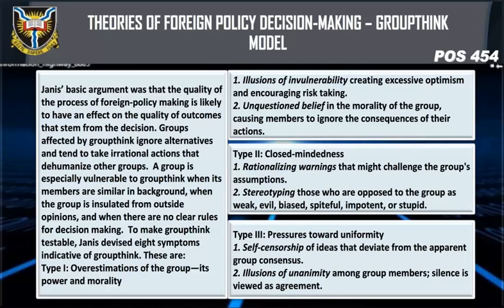The eight symptoms are organized into three types. Type one — overestimations of the group, its power and morality — includes: illusions of invulnerability, creating excessive optimism and encouraging risk-taking; and unquestioned belief in the morality of the group, causing members to ignore the consequences of their actions.